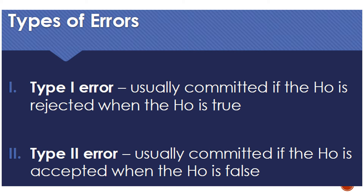We have types of errors. Type 1 error is usually committed if the null hypothesis is rejected when the null hypothesis is true. For example, you are committing type 1 error if you are saying that it will not rain today, but actually it will rain today — you are not accepting it as a fact while in truth it is true that it will rain today. Type 2 error is usually committed if the null hypothesis is accepted when the null hypothesis is false. This is like assuming that it will rain today when in fact it will not rain today.